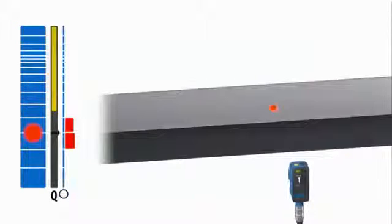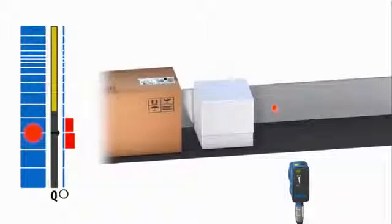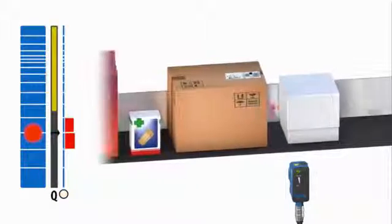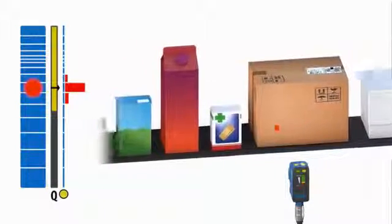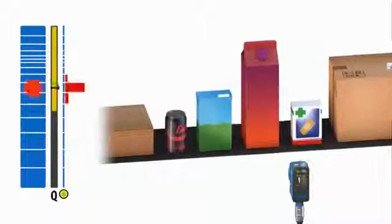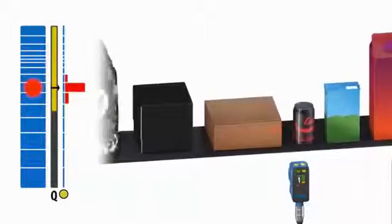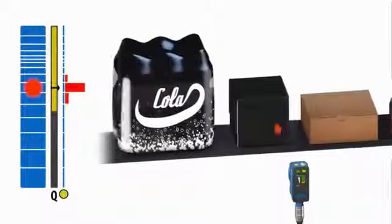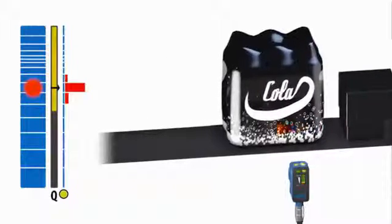This applies to applications with objects in close proximity to a background, as well as reliably detecting when no background is present. SureSense background suppression technology reduces setup time during machine changeover and ensures product detection even with varying objects.